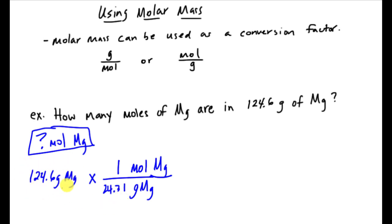So what I do is I take my 124.6 and I'm going to divide it by the molar mass, which comes out to be 5.13. Let's see, I have 1, 2, 3, 4 significant figures, so probably I should go one more. So 5.125 moles of magnesium.